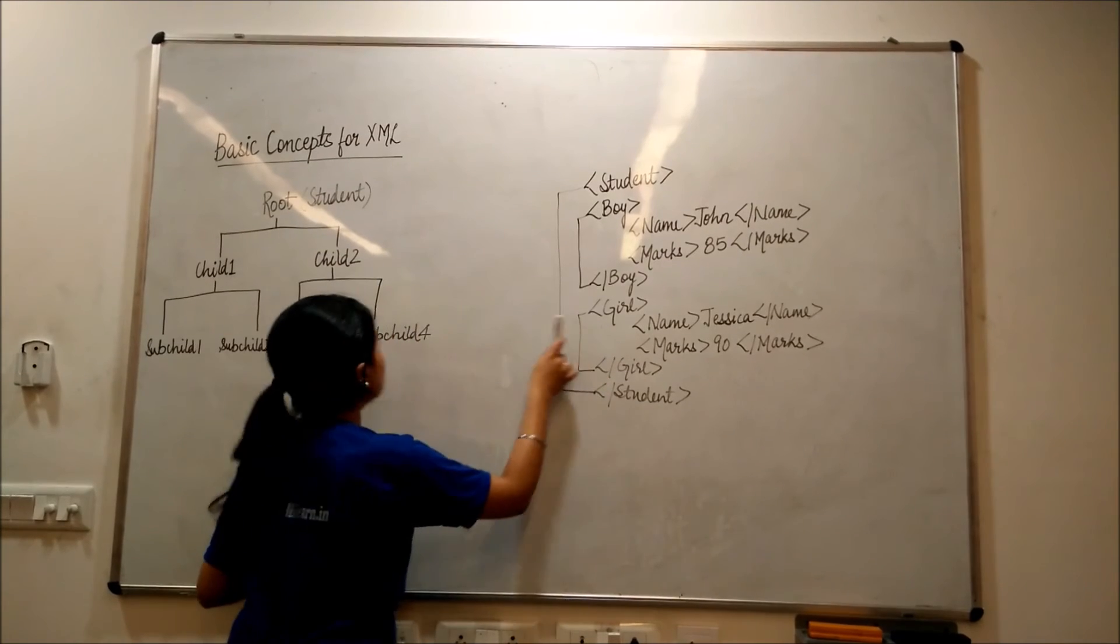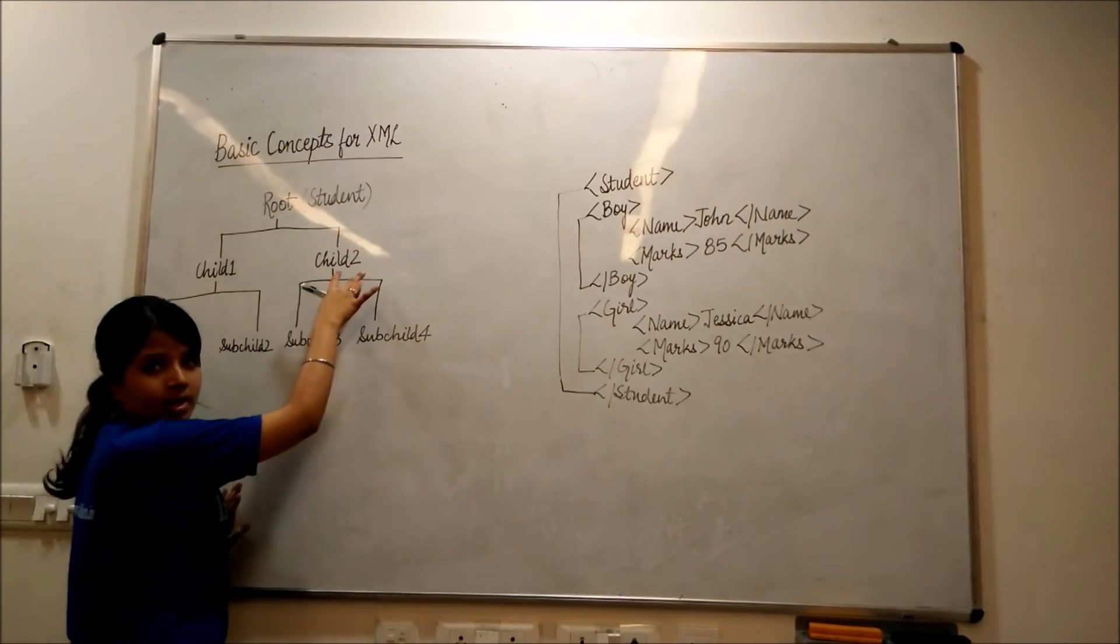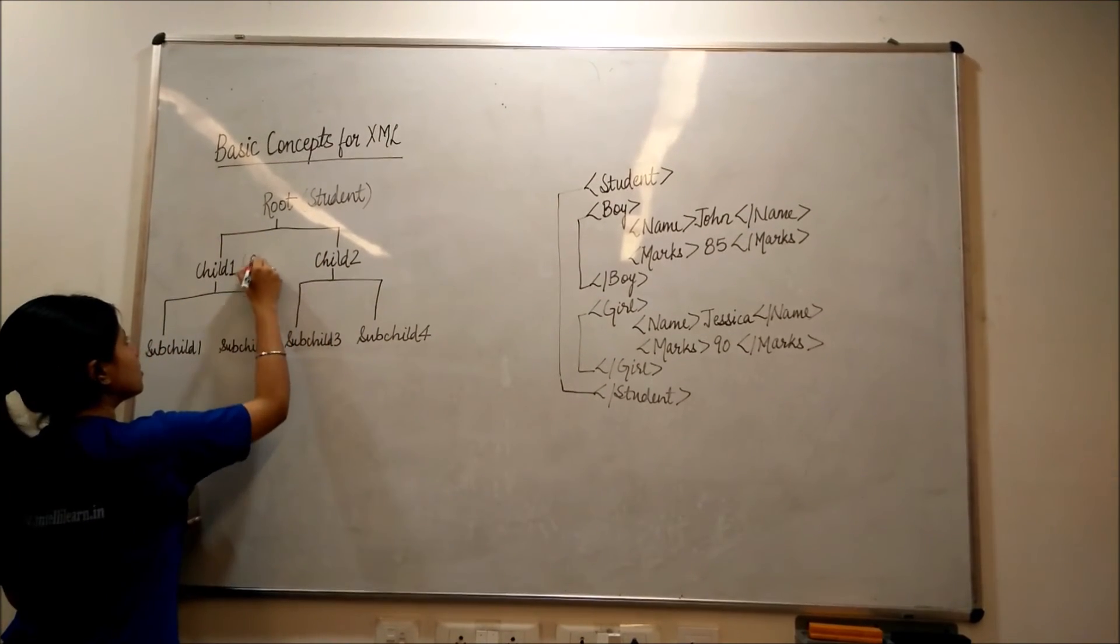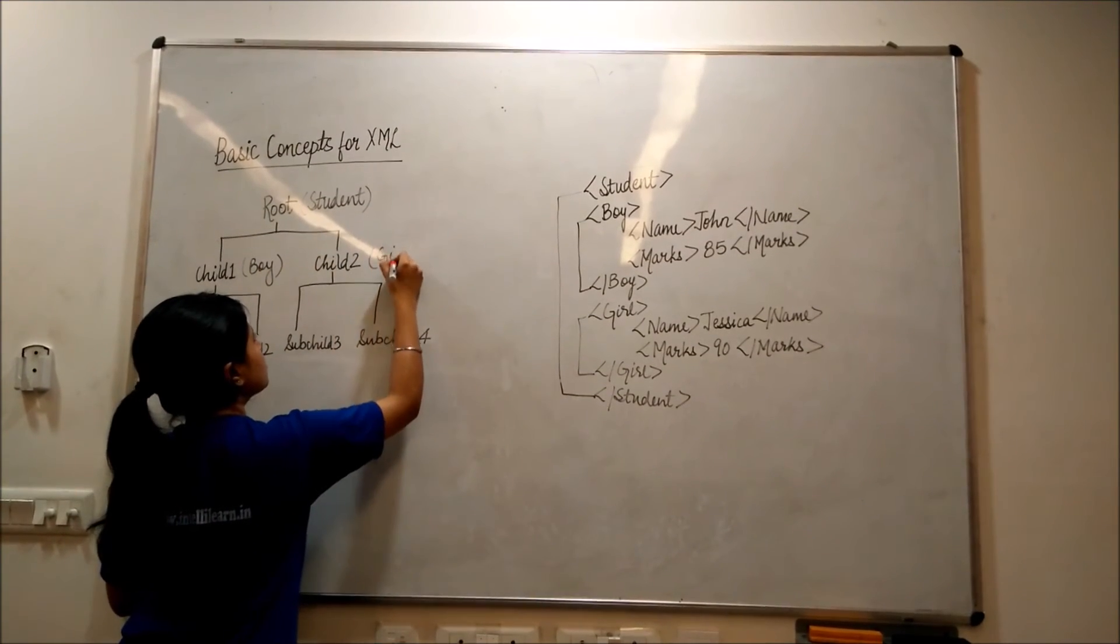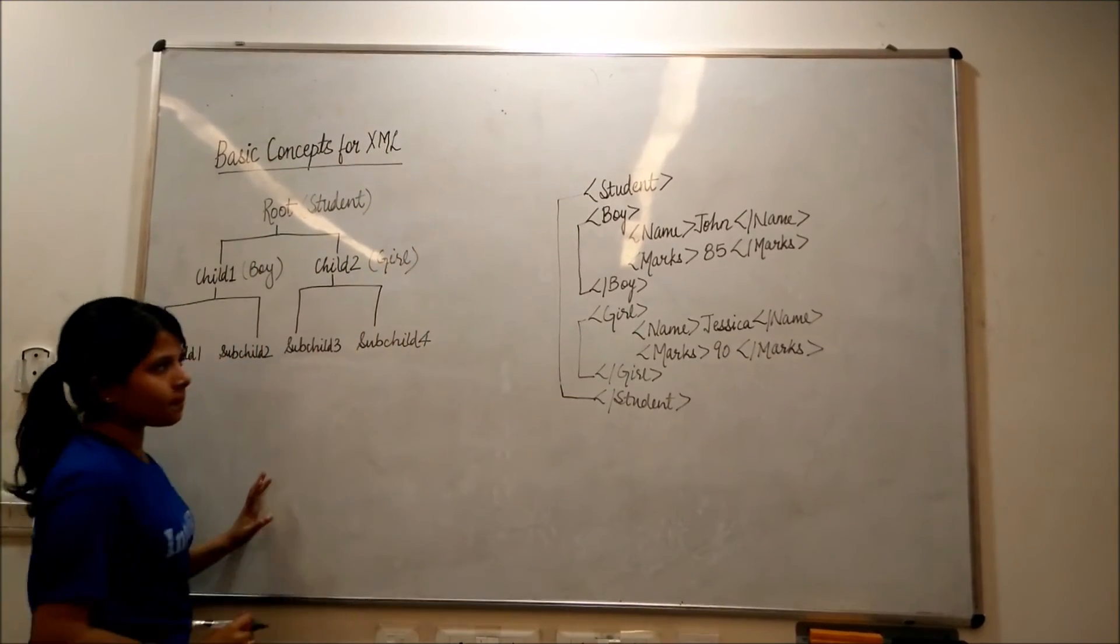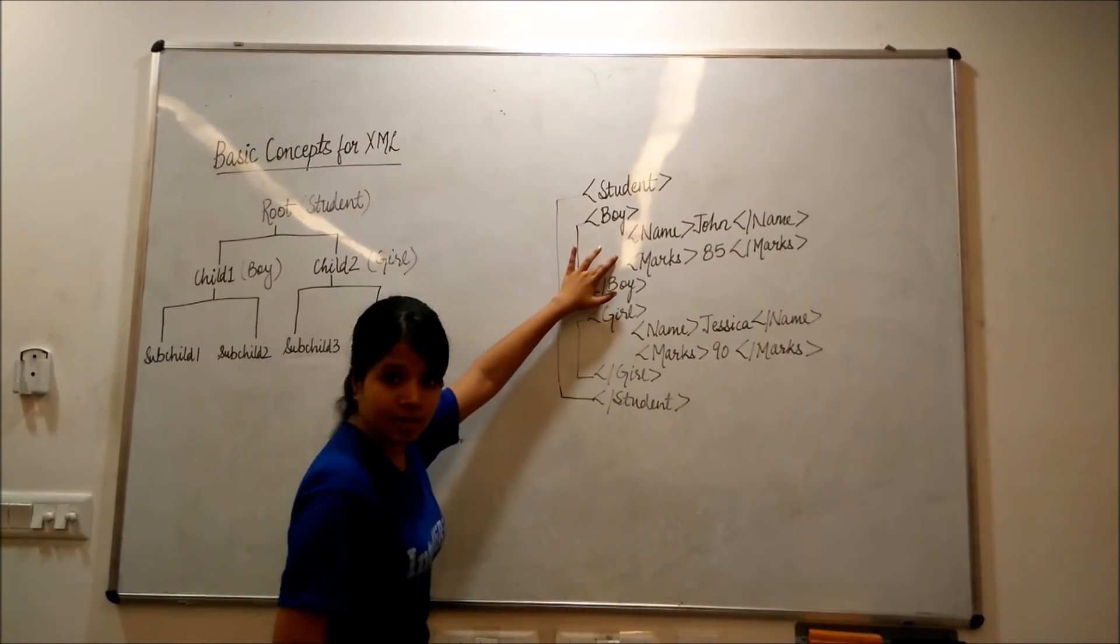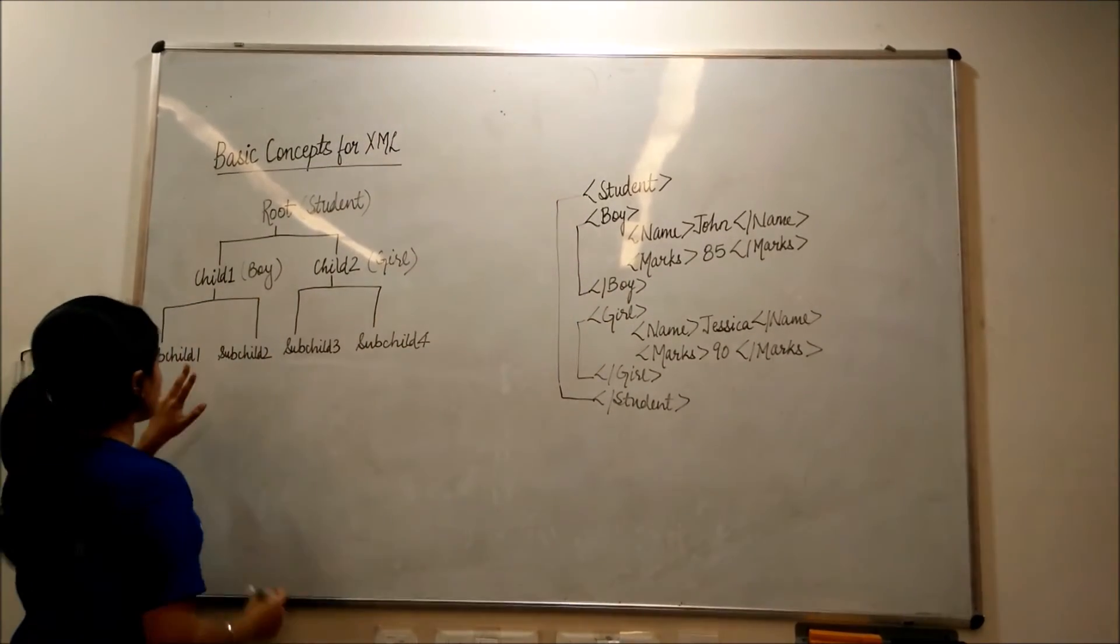Boy and girl are our child 1 and child 2. Name and marks, they are the sub child.